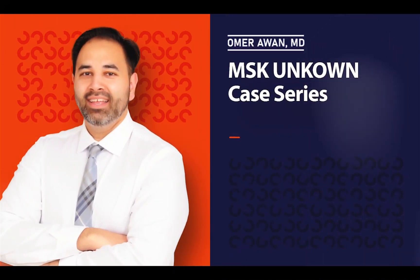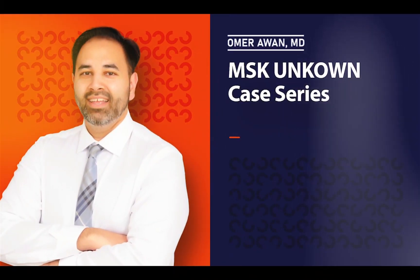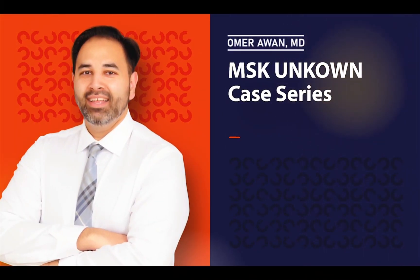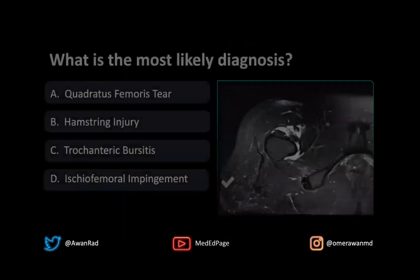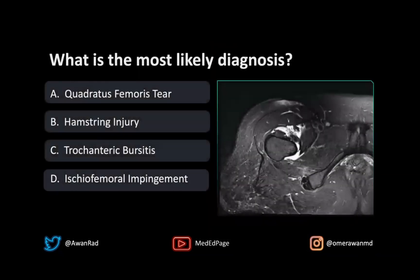Hello everyone, and welcome to MSK Unknown Case Series, Case 91. This is an axial T2 facet image through the hip, showing an important finding. The high-yield question is: what's the most likely diagnosis?